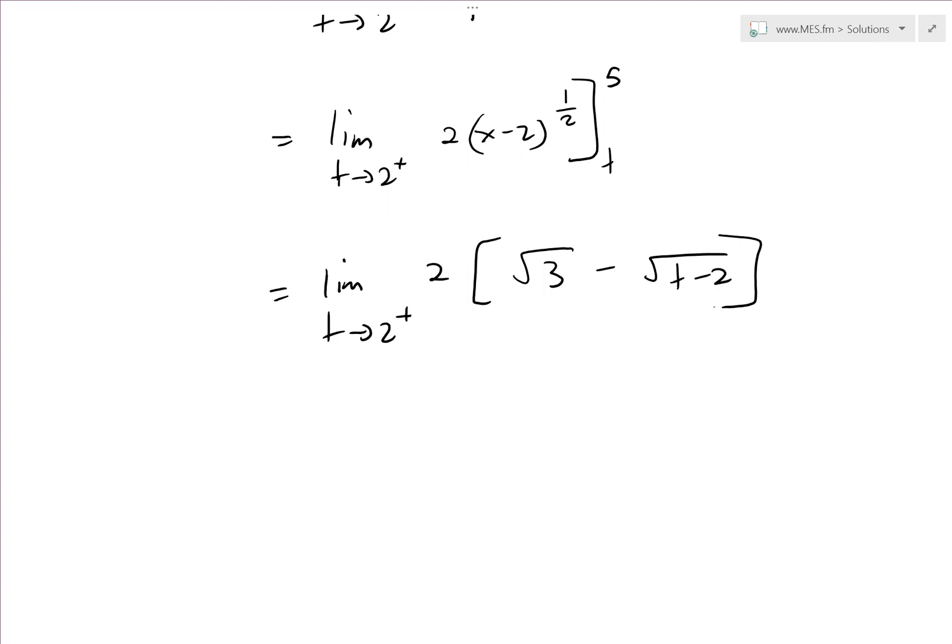When you plug in 2 from the right side, the square root has to be greater than or equal to 0. As you plug in from the right side, it's approaching 0.